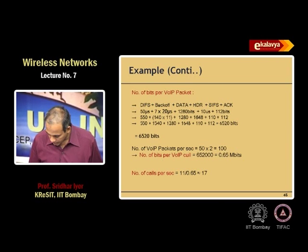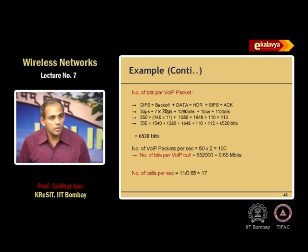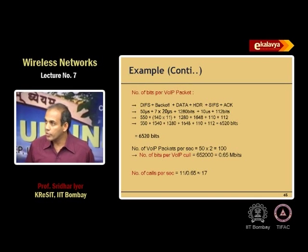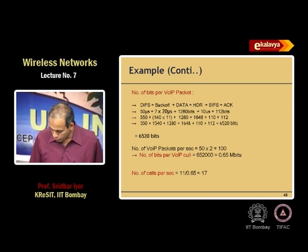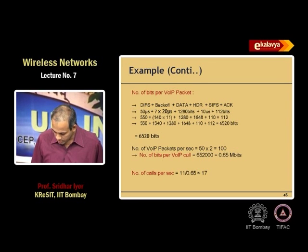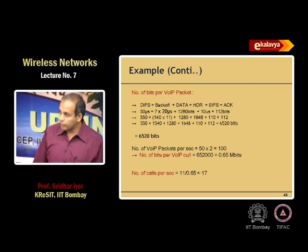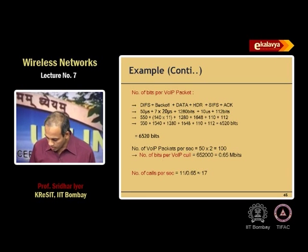DIFS is 50 microseconds plus backoff. The total value depends upon the backoff we assume. Let us say we are assuming a backoff value of 7 — 7 sounds reasonable. So 7 as the backoff value: 7 into 20, since slot time is 20 microseconds, so 7 into 20 microseconds. We have to be careful since we are going back and forth between bits and microseconds. So, what is the data now?